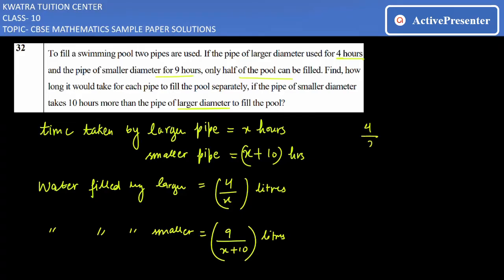So 4/x plus 9/(x + 10) is equal to how much? It will be equal to half, because half is being filled in the pool. So we equate this equation to 1/2.